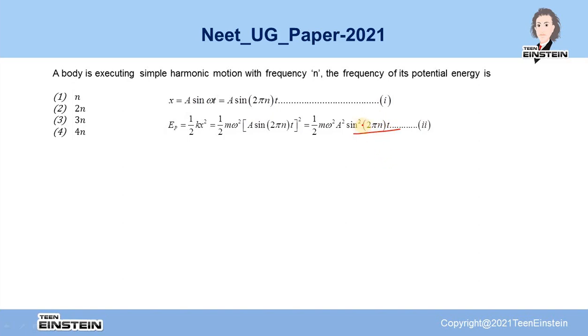Now, look here, you have got sin square term, but generally simple harmonic oscillation is expressed by a linear sinusoidal function. So to get the frequency of oscillation of this potential energy, you have to express this term in terms of simple harmonic motion. To do that, you have to make this as a linear sinusoidal function.